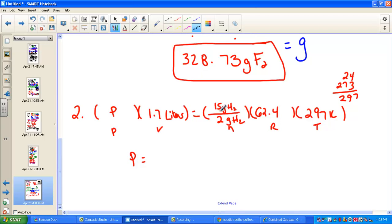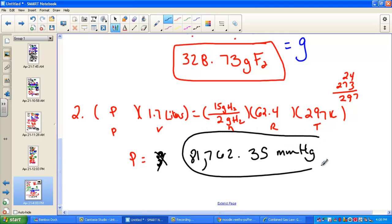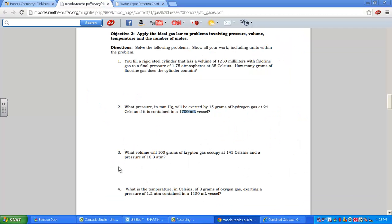Ready? Calculator sequence. Hit this with me. 15 halves, 15 divided by 2, times 62.4, times 297. Now let's divide out the 1.7 liters, and we'll have our pressure. 81,762.35 millimeters of mercury. That's an extremely high pressure. Keep going.